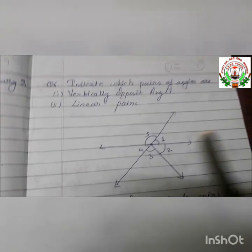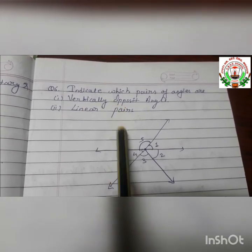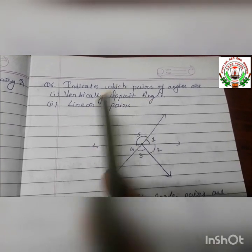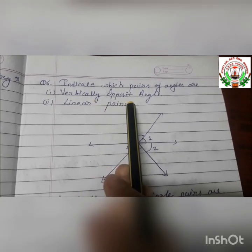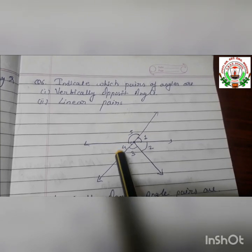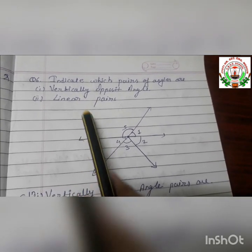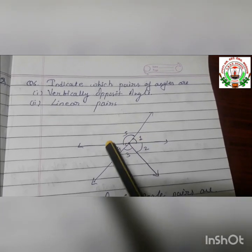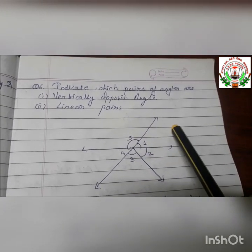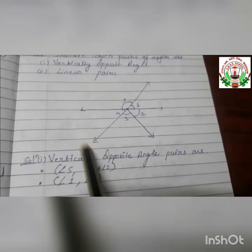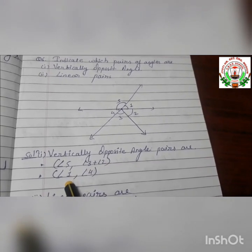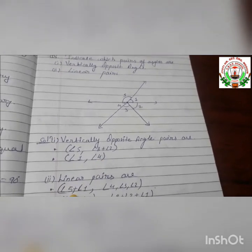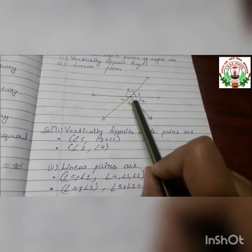Question number 6: looking at the diagram, we identify which angles are vertically opposite and which form linear pairs. Vertically opposite angles are those exactly opposite to each other, and linear pair angles add up to 180 degrees. The vertically opposite angle pairs are: angle 5 and angle 1 plus angle 2, and angle 1 and angle 4. Linear pair angles include angle 5 and angle 1.